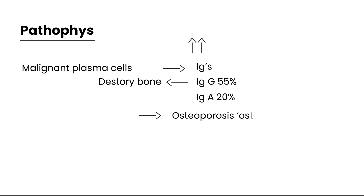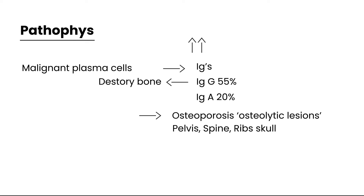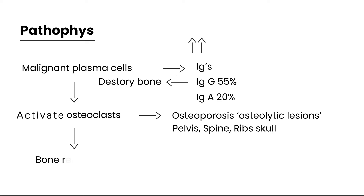In particular, you will see very specific lesions on x-rays known as osteolytic lesions. You can see them in the pelvis, the spine, the ribs, and also in the skull. The reason this happens is because these malignant plasma cells activate osteoclasts, and osteoclasts are responsible for bone resorption.